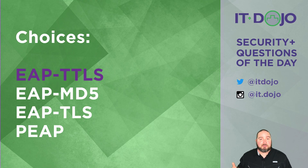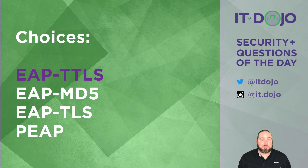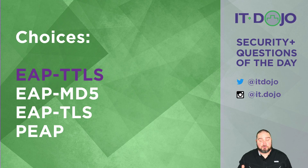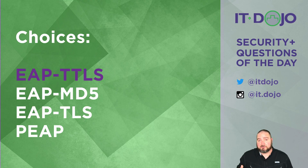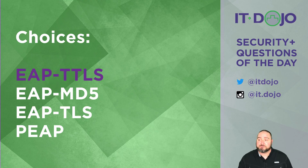Not only is EAP-MD5 susceptible to man-in-the-middle style attacks because of its lack of mutual authentication, it also doesn't support any kind of encryption after the fact. In practical application, you don't see EAP-MD5 being used in wireless LANs at all. You do see it supported in LAN implementations using 802.1X, but even then it's frowned upon. MD5 as a hashing algorithm just has a dismal reputation these days, so it's not a good answer here — it's not a viable wireless LAN solution.